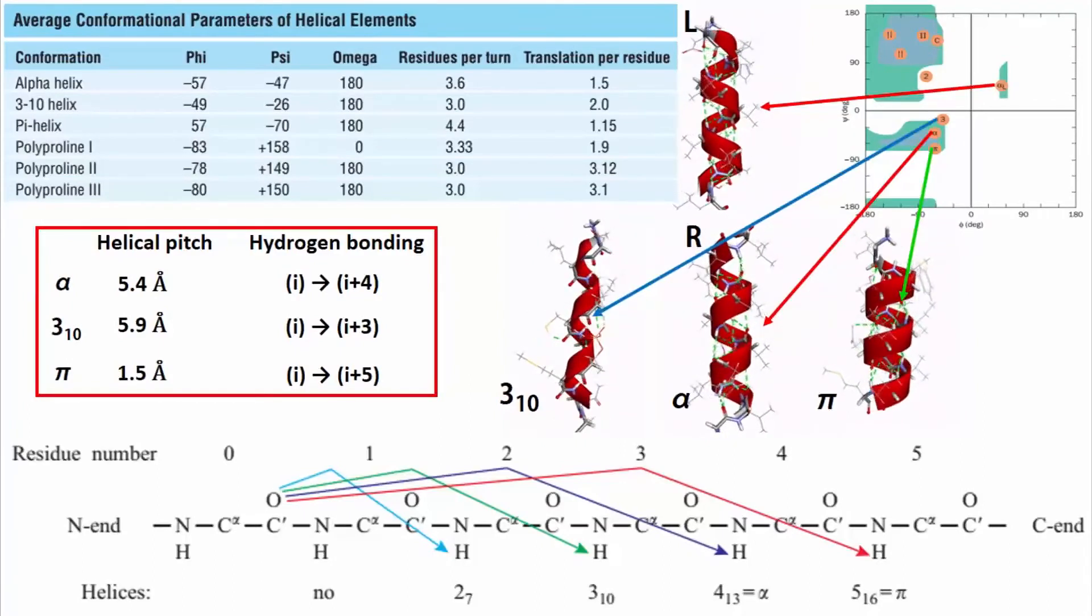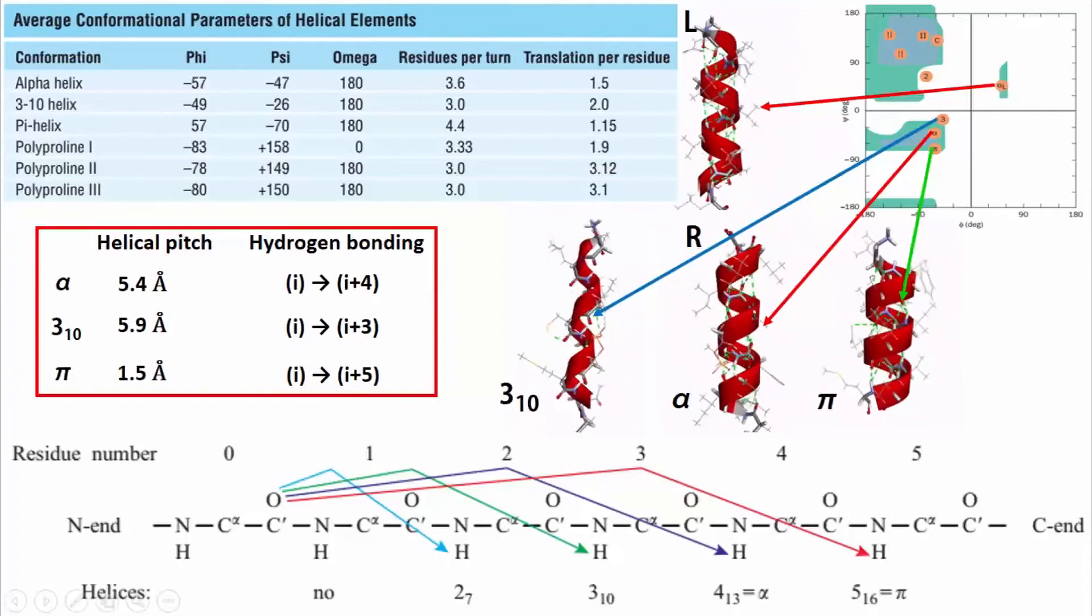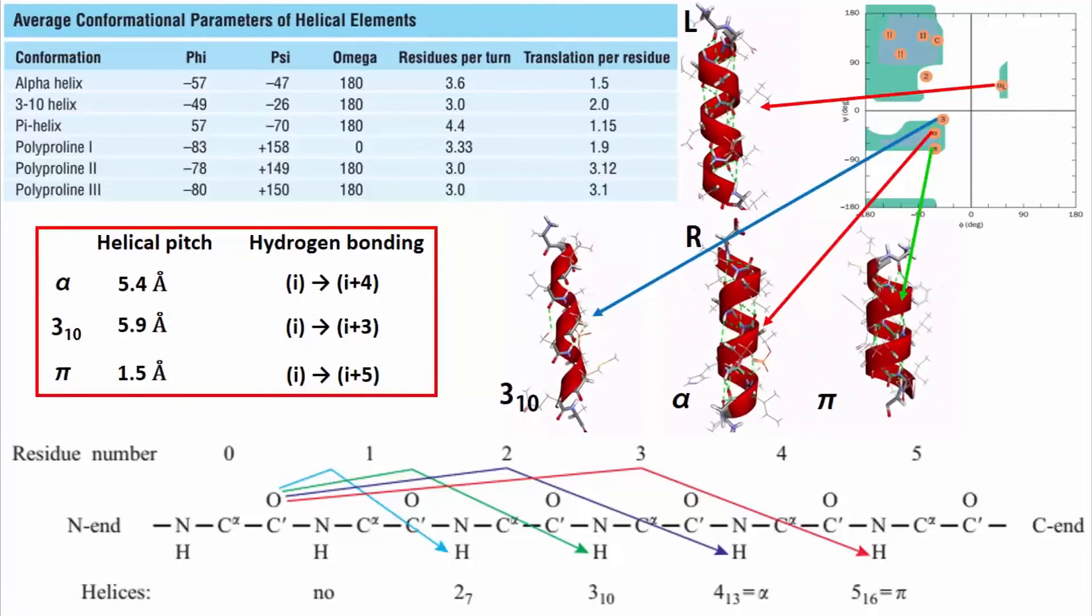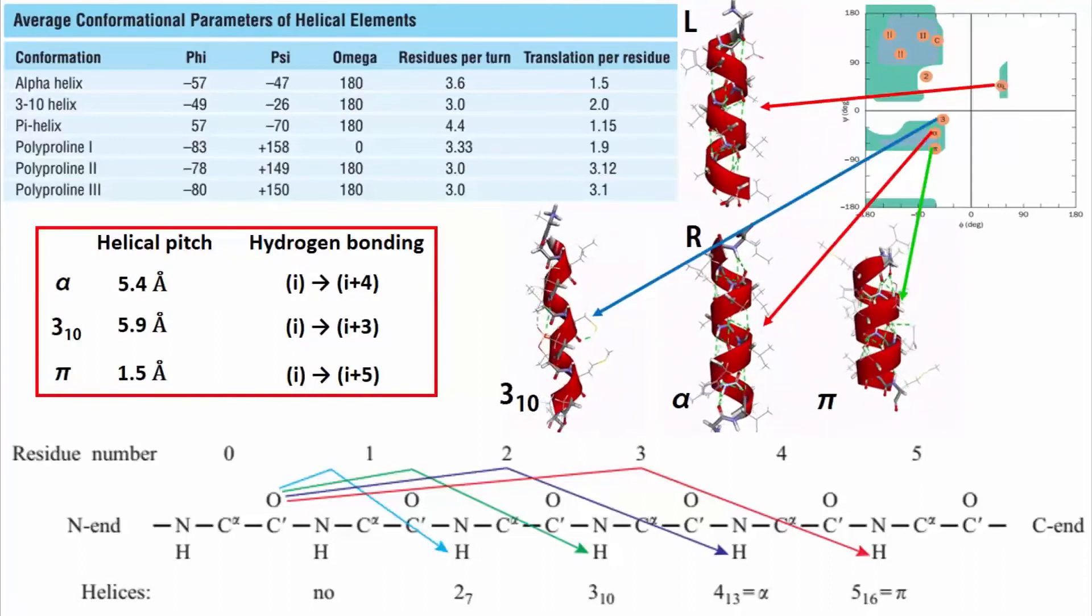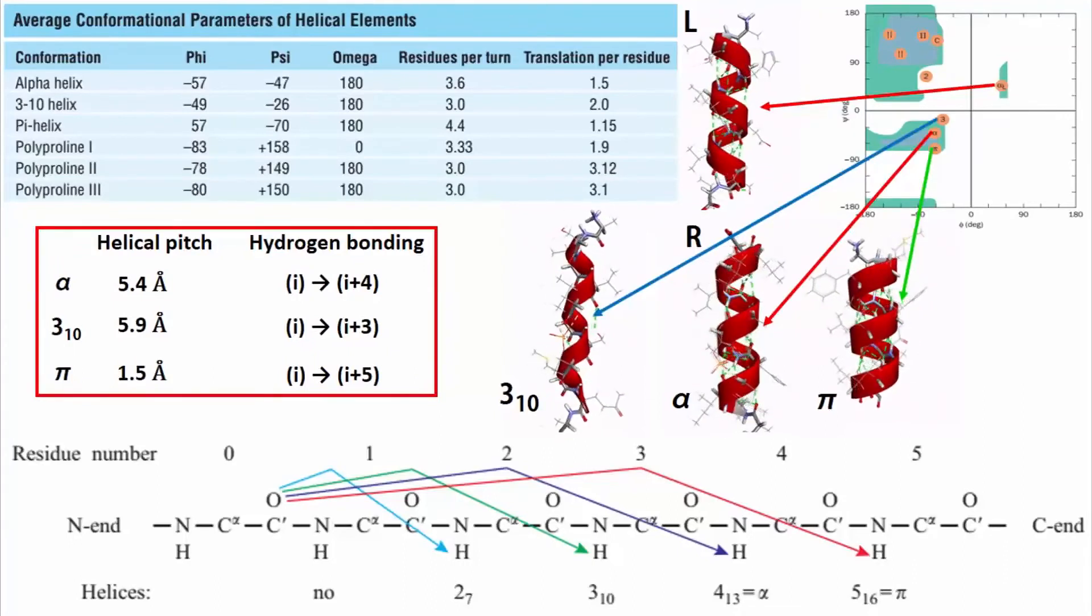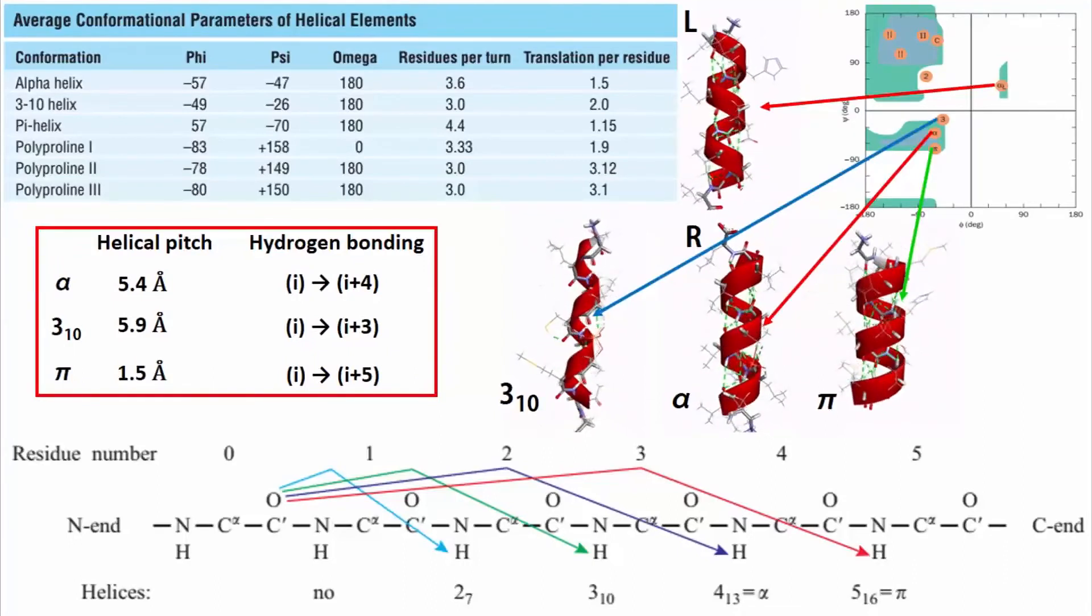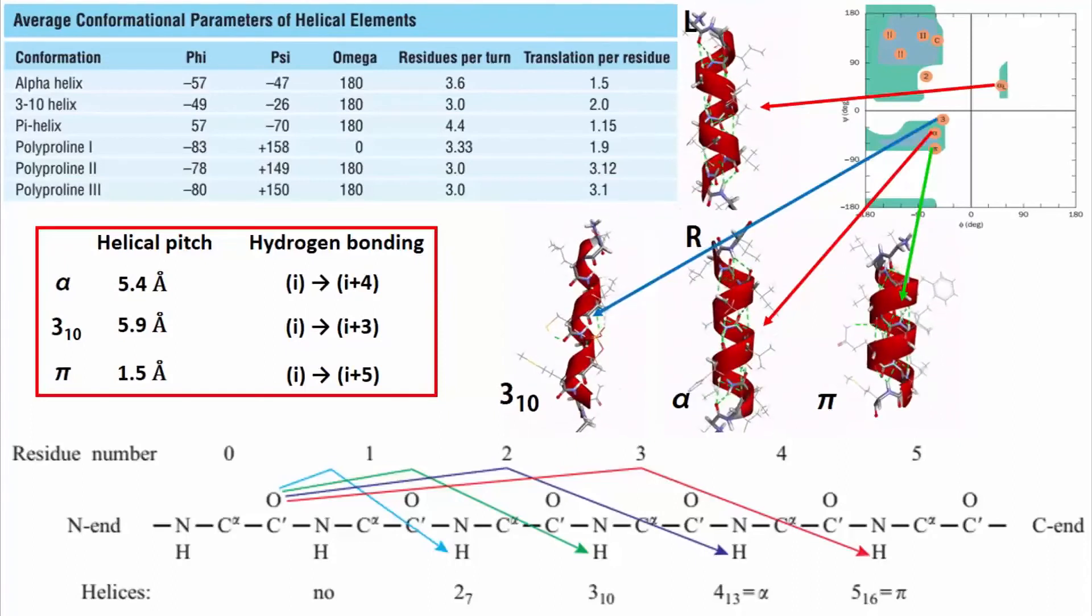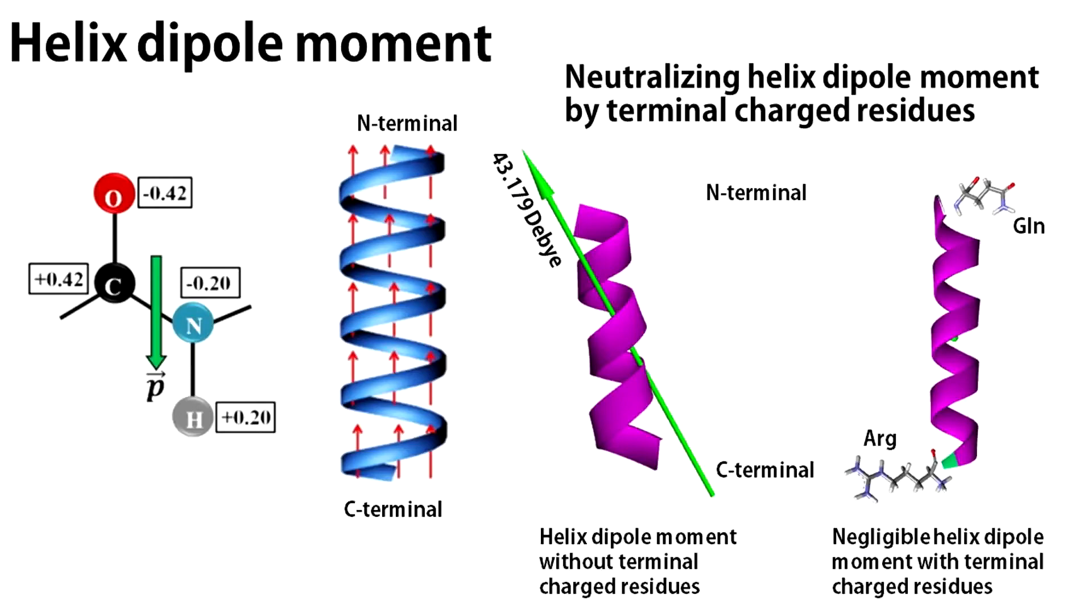Hydrogen bonds have a specific distance criterion. So you can easily understand that if the same number of amino acids make up alpha, 310, and pi helix, the pi helix has to be the shortest, the 310 helix has to be the longest, and alpha helix will be intermediate. Longest means highest helical pitch. Shortest means smallest helical pitch.